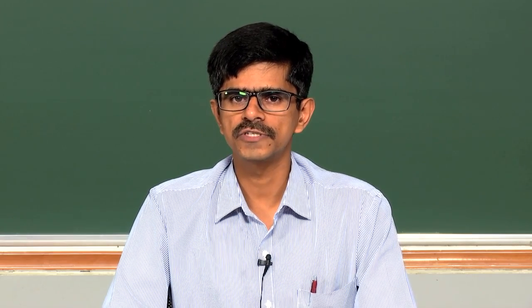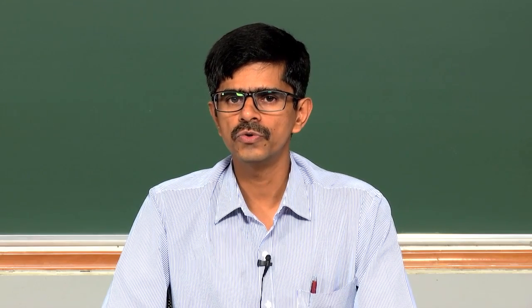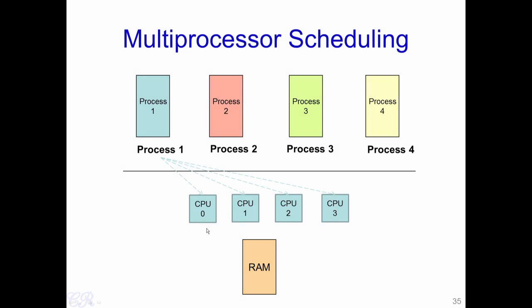Hello, so far we have seen how scheduling algorithms are designed for a single CPU. The scheduling algorithm would choose a process to execute for the CPU. In this particular video, we will look at multiprocessor scheduling algorithms. Essentially we will see that if we have multiple processors in the system, how a scheduling algorithm could schedule processes into these various CPUs.